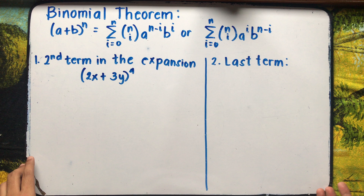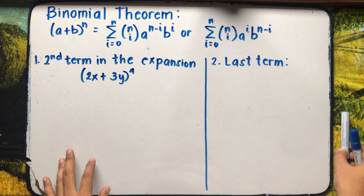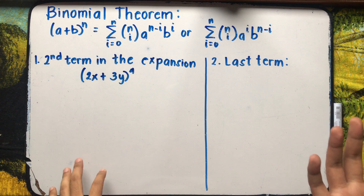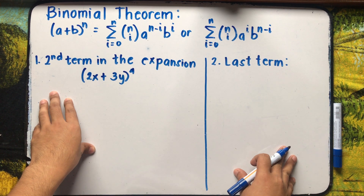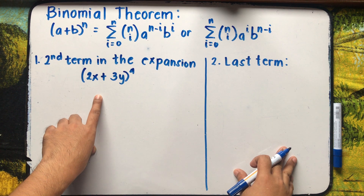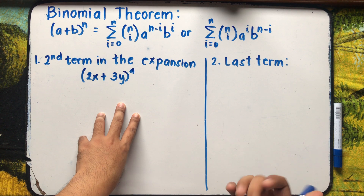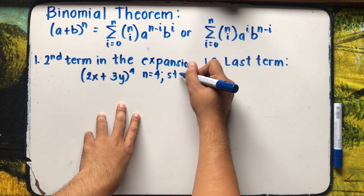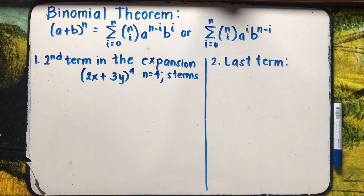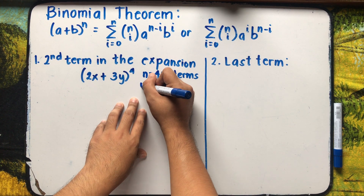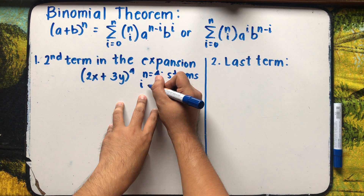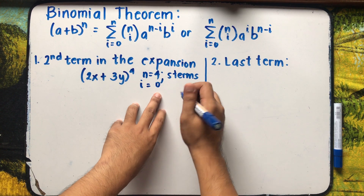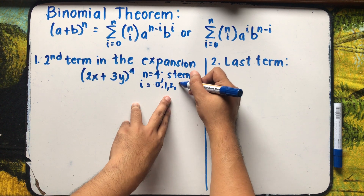We're asked to find a specific term for the expansion. For question number 1, we're asked to get the second term in the expansion of (2x + 3y) raised to 4. First, identify n: n is equal to 4. If n equals 4, we have 5 terms. The values of i for those 5 terms are 0, 1, 2, 3, 4.